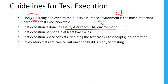Test execution is done in the quality assurance environment. Test execution happens in at least two cycles — one cycle of testing is not enough. We need to have multiple cycles, including re-testing, regression testing, and functional testing. We need to do certain kinds of testing over multiple cycles until our software achieves the required quality. The test execution phase consists of executing the test cases, and along with that, automation scripts should also be executed.